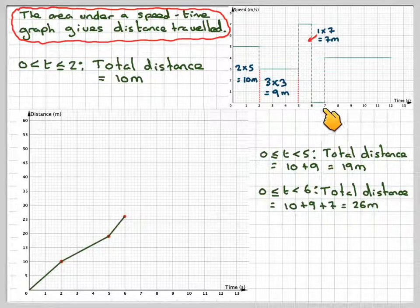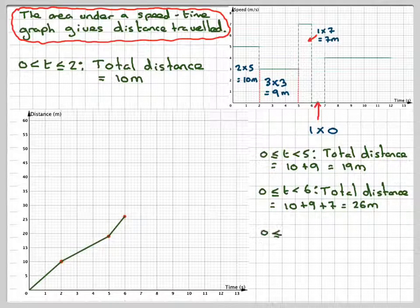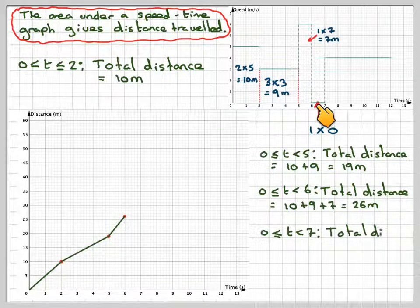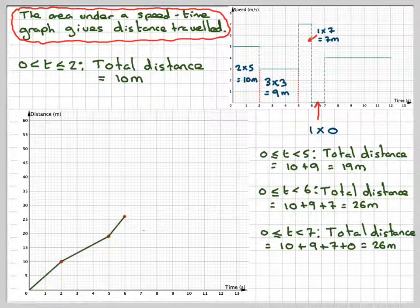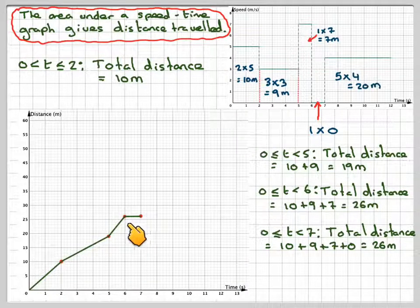Here, it doesn't go anywhere. There's no distance underneath the graph. So the total distance will still be 26, therefore we get a horizontal line.